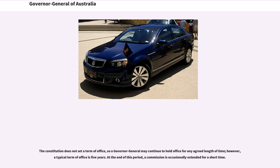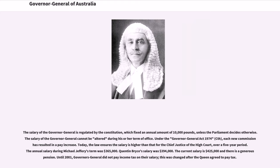At the end of this period, a commission is occasionally extended for a short time. The salary of the Governor-General is regulated by the Constitution, which fixed an annual amount of £10,000 unless Parliament decides otherwise, and cannot be altered during the term of office. Under the Governor-General Act 1974, each new commission has resulted in a pay increase. Today, the law ensures the salary is higher than that for the Chief Justice of the High Court over a five-year period. The annual salary during Michael Jeffery's term was $365,000; Quentin Bryce's salary was $394,000. The current salary is $425,000 and there is a generous pension. Until 2001, Governors-General did not pay income tax on their salary; this was changed after the Queen agreed to pay tax.